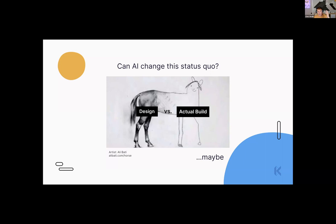There are shots fired at engineering here — and some at design in a minute. The idea being: can AI actually help us change this? What's the point of using AI? I want to dive into this specifically.